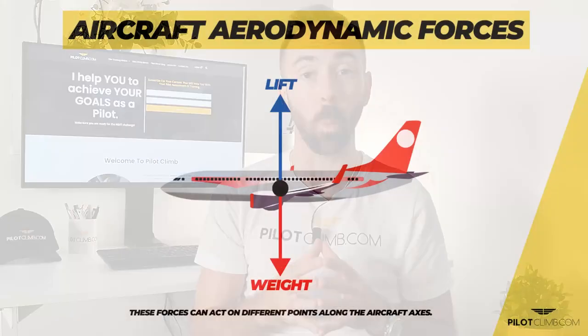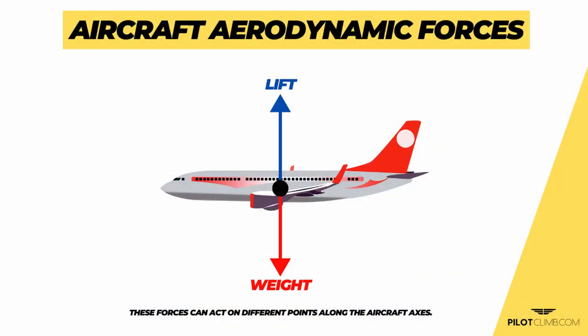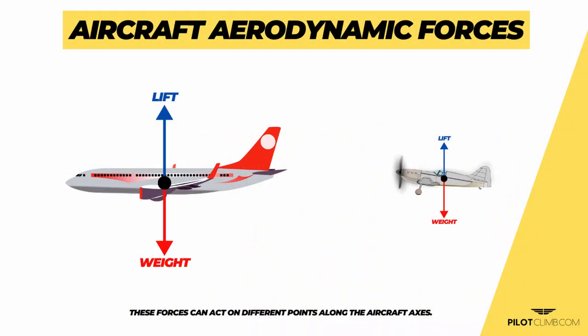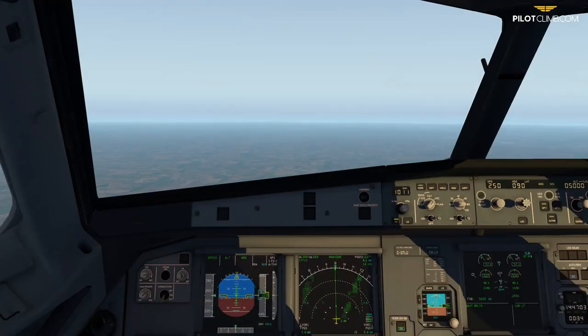The second important aerodynamic force is weight. Weight is the force that is opposite to lift and is caused by the mass of your aircraft. This force is always pointing towards the center of the earth. The higher the mass, the higher the weight of the aircraft, the bigger this force will be. So when lift and weight are in equilibrium — they are equal — the aircraft is flying in straight and level flight.